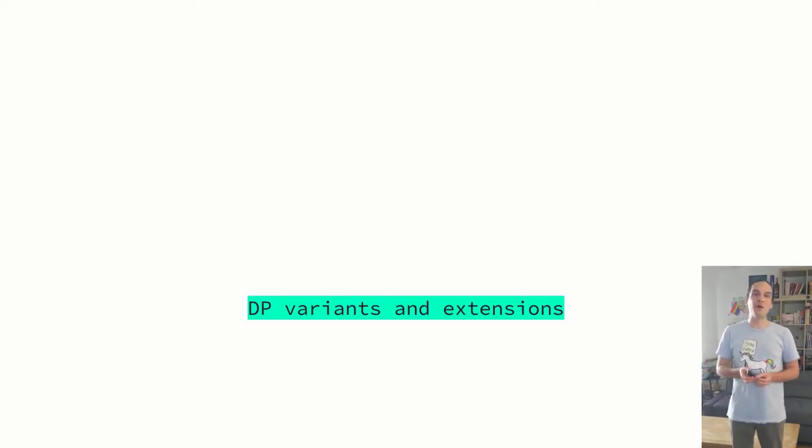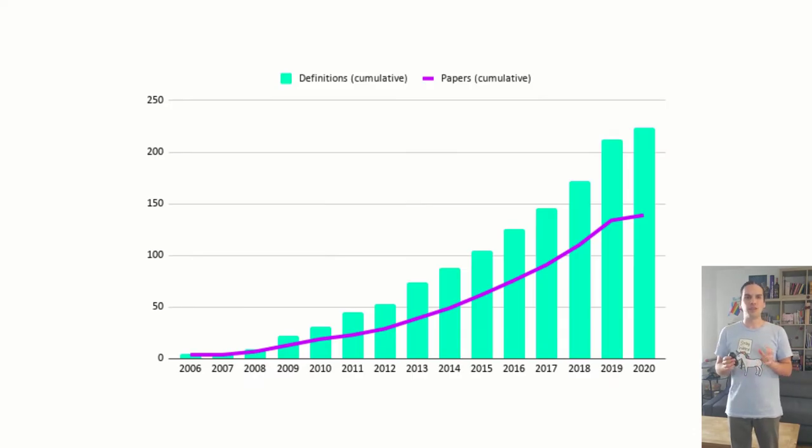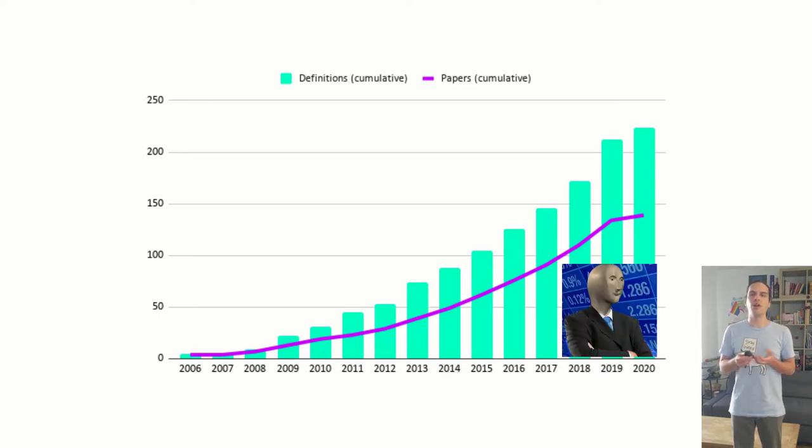Can someone guess how many definitions we found? Oh, yeah, right, that's a recording. The answer is, we found a lot. More than we expected. And the trend doesn't seem to be slowing down either. So something must lead people to keep creating new variants. What is it, and how can we put some order into this gigantic mess?